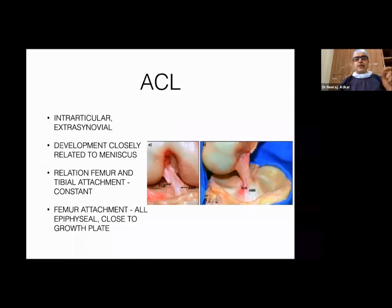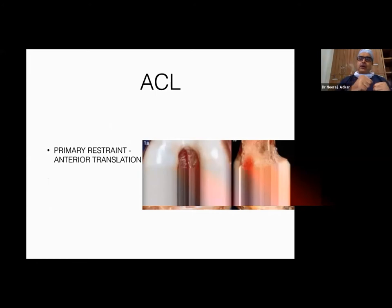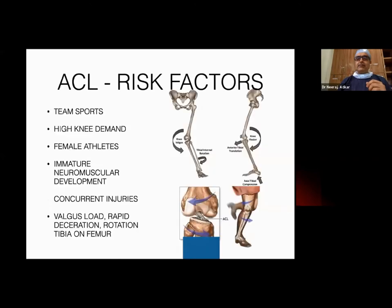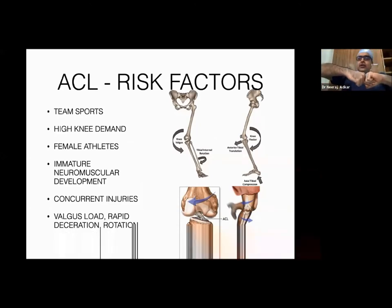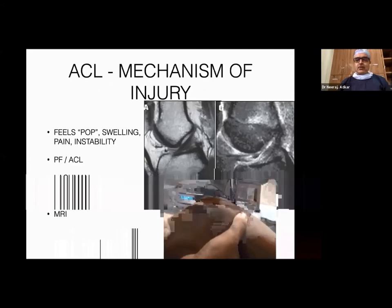Now coming to the most common injury: ACL — anterior cruciate ligament — injury. The ACL is the main stabilizer of the knee joint and is most commonly injured by a twisting or cutting movement. When your foot is planted and your body rotates through the knee joint — such as during a jump — you can injure the ACL. It is more commonly seen in female athletes and those with weak muscles.